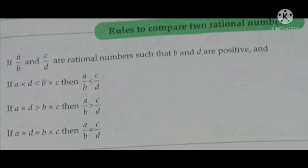Before we start Question 3, let's learn the rules to compare two rational numbers. If a/b and c/d are rational numbers such that b and d are positive: If a × d < b × c, then a/b < c/d. If a × d > b × c, then a/b > c/d. If a × d = b × c, then a/b = c/d.